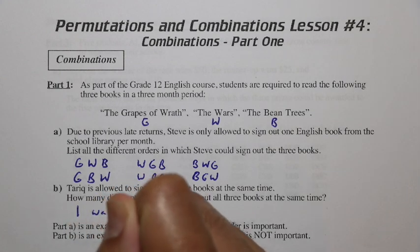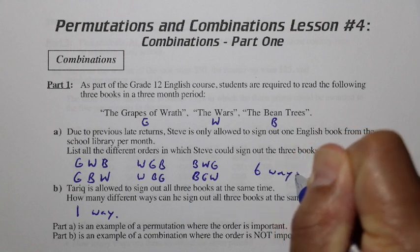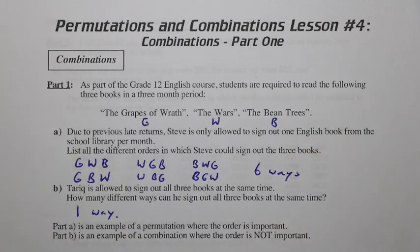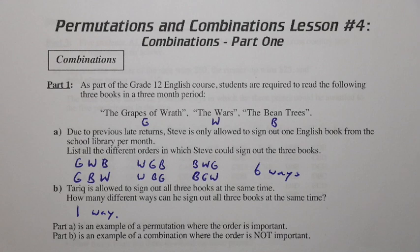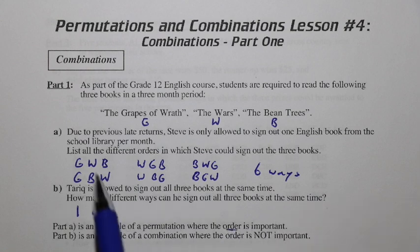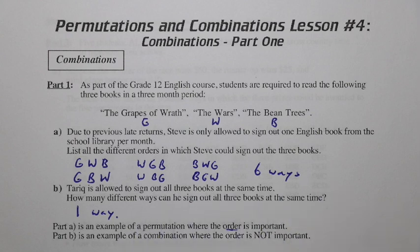Well, this is one way. So Steve has six parallel universes — six ways. But for Tariq, they're all the same. You could say there are six ways here, but if he has them all at the same time, then there's no difference in those six ways. In fact, those six ways are all repeated. In Part A with Steve, order was important — coming in and getting Grapes of Wrath first was different than getting it second.